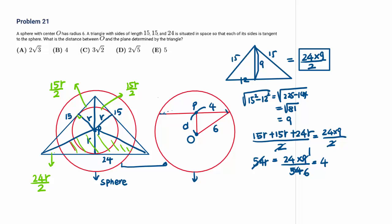Now we find D using the Pythagorean theorem. The sphere radius is 6 and the cross-section radius R is 4, so D equals the square root of 6 squared minus 4 squared, which is the square root of 36 minus 16, equals the square root of 20, equals 2 root 5. So choice D is the answer.